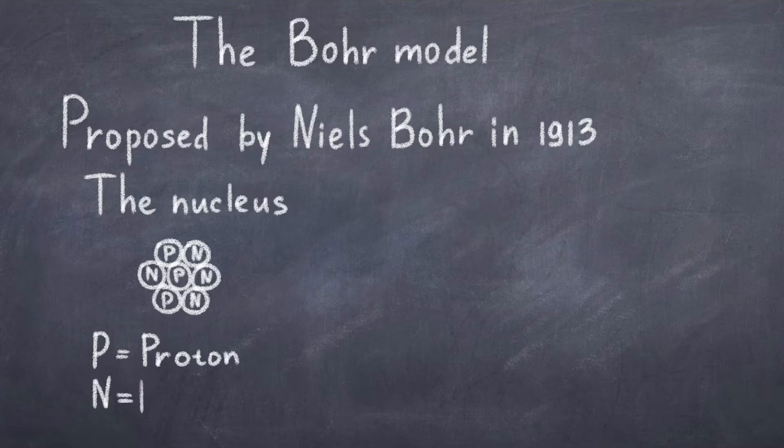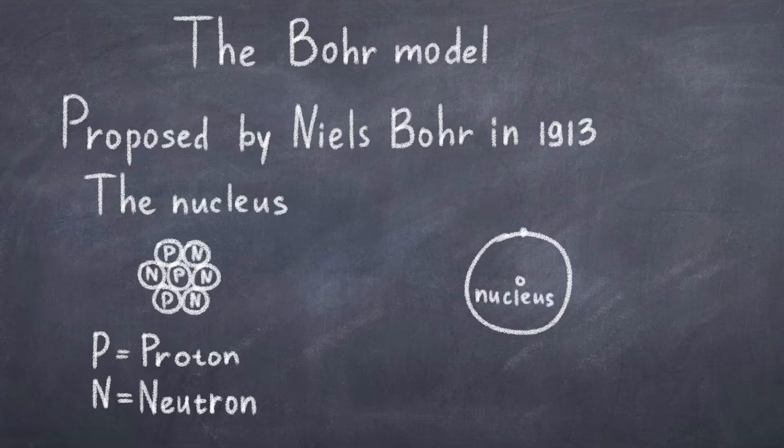In the Bohr model, the nucleus, made from protons and neutrons, is placed in the center. Around the nucleus, the electrons orbit in special shells, which can accommodate a specific number of electrons. In this model, the electrons are only allowed to be in these discrete shells.